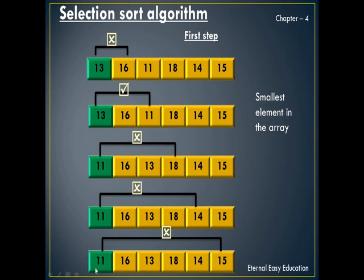Again the element in the first position, 11, is compared with the last element 15. As 11 is smaller than 15, no swapping. So the first element is compared with each element; if it is found to be greater than the compared element, swapping takes place, otherwise no swapping. In the first pass we have placed the smallest element at index 0. Then we move to the next step.